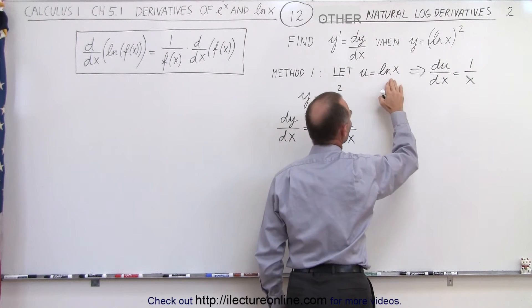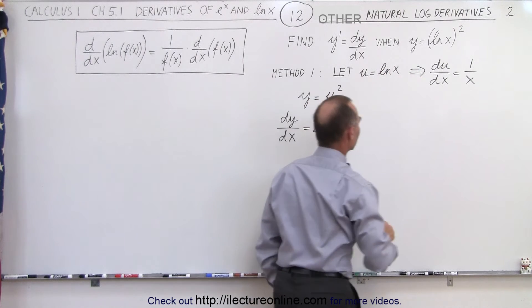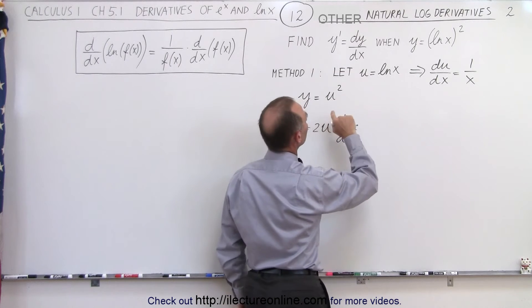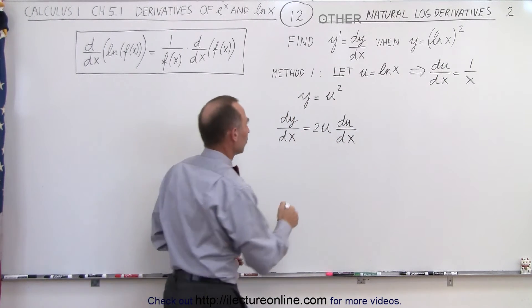Obviously, when u is equal to natural log of x, the derivative of that is equal to the derivative of this, which is 1 over x. And since u is equal to the natural log of x, now let's make those two substitutions and see what we get.